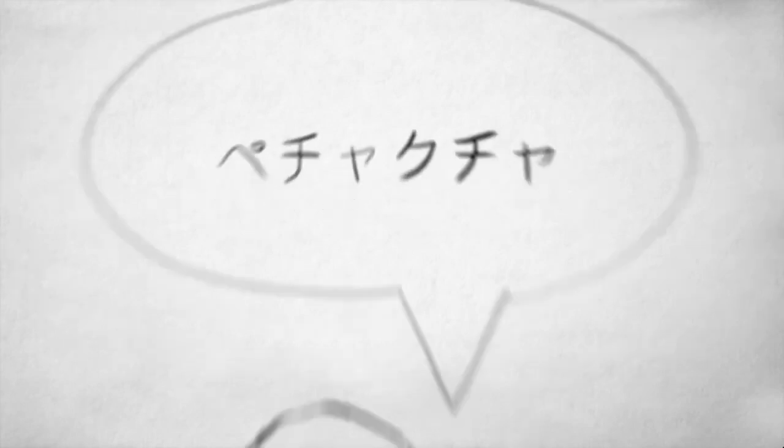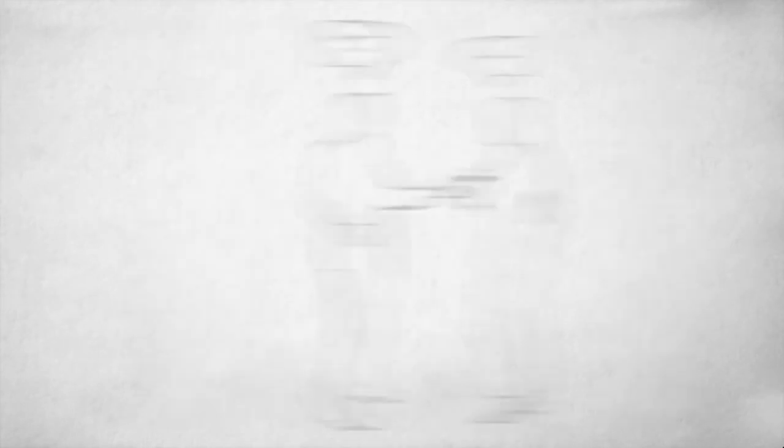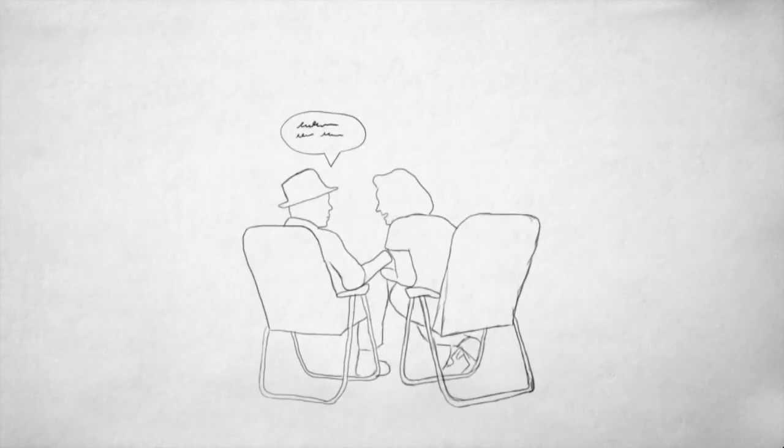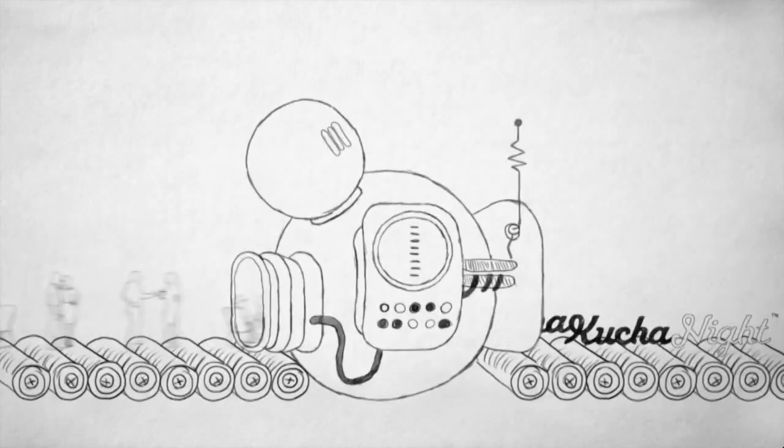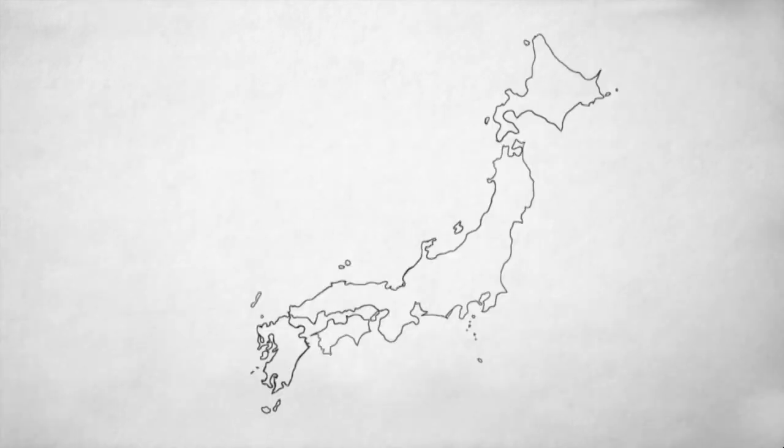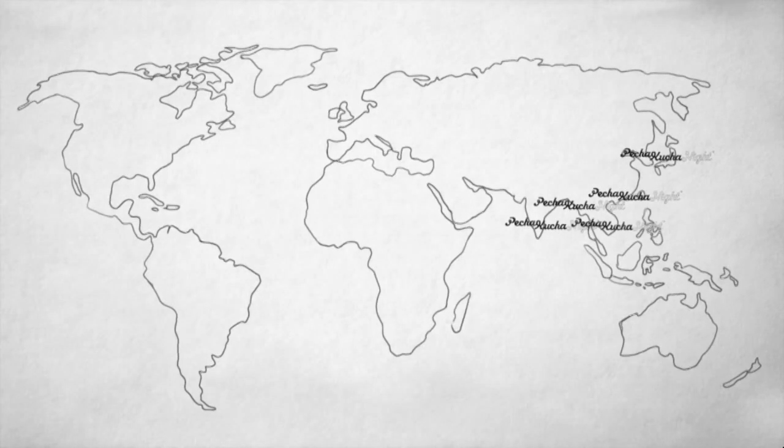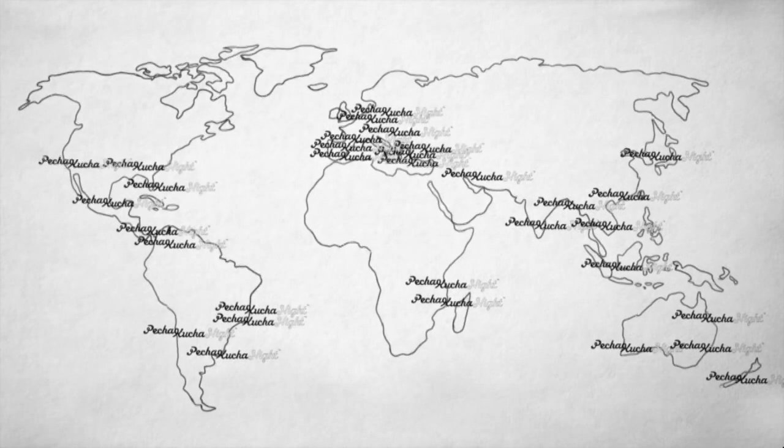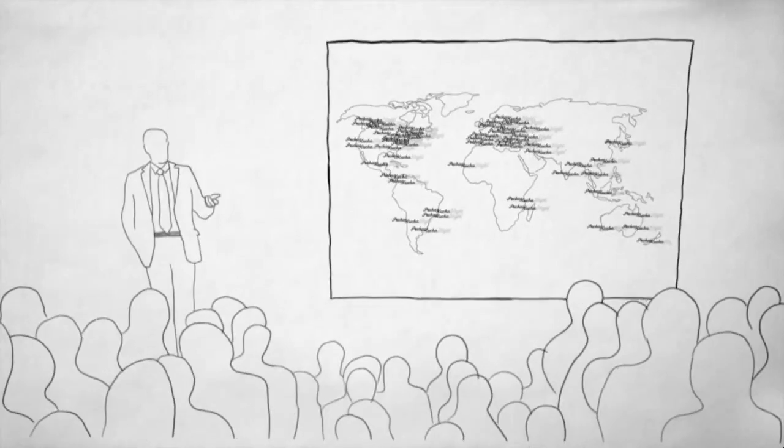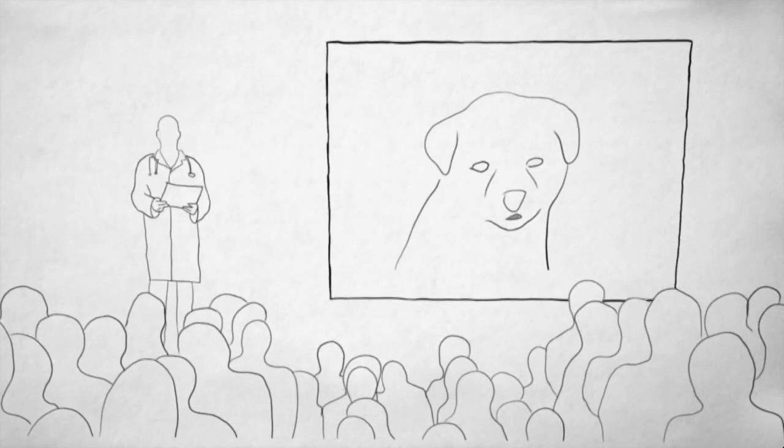Pechakucha is a Japanese word for chit-chat, and is the name of a presentation format created in Japan in 2003 by Astrid Klein and Mark Dypen, two architects looking for a way people could share their work quickly and simply in public. Since then, the idea has spread to over 700 cities around the world.